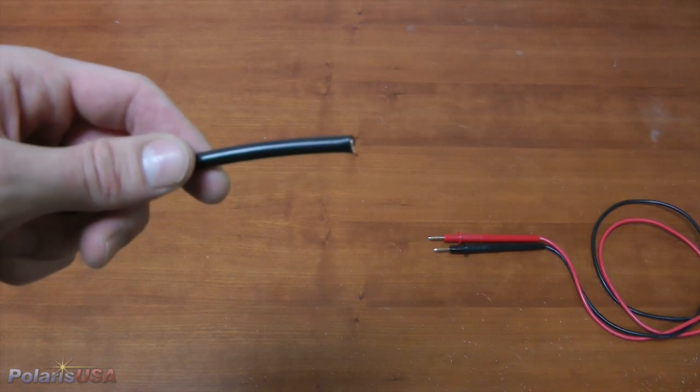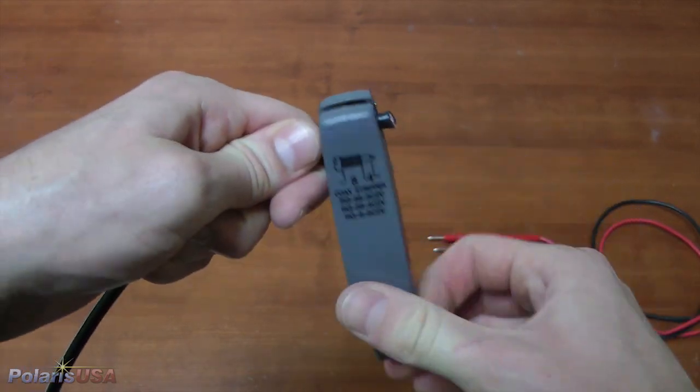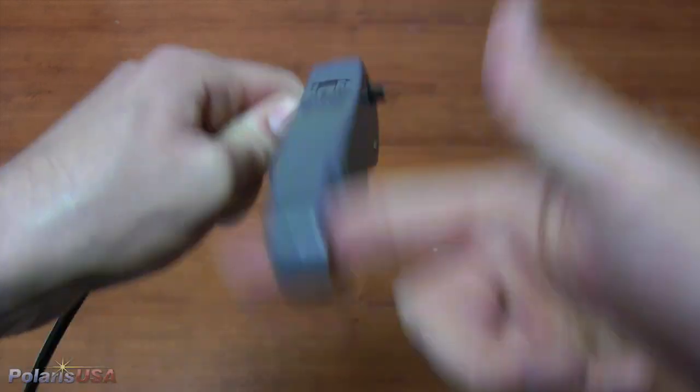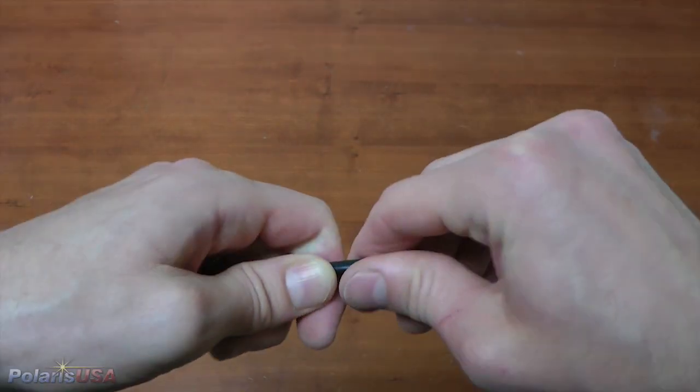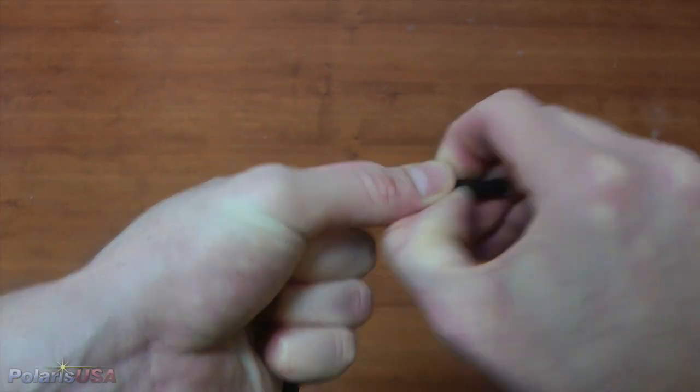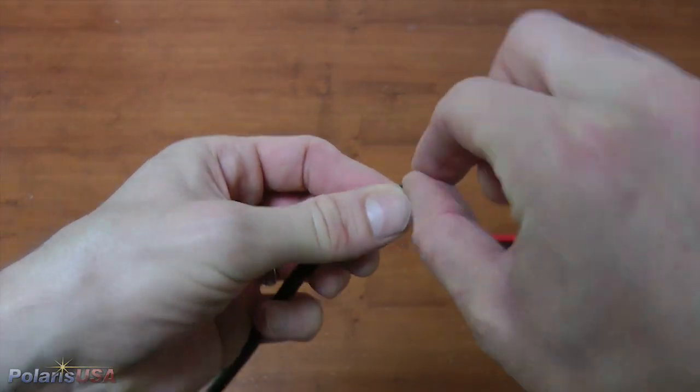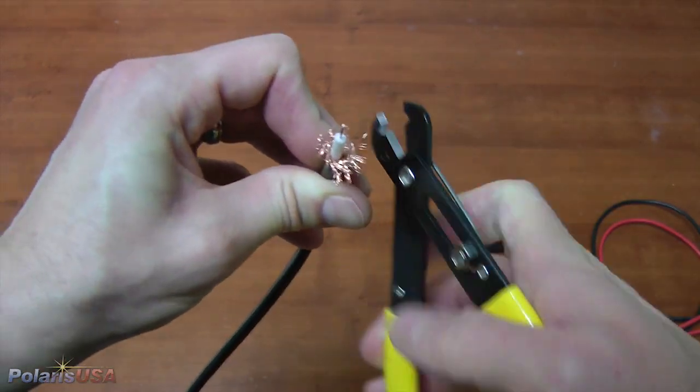I am now going to repeat the process for the other end of the cable, though a little bit more quickly. I will start again by stripping the cable, leaving approximately a quarter inch off the end. I will then remove the outer rubber insulation and pull back and trim the outer braided shielding.